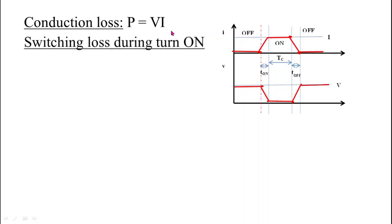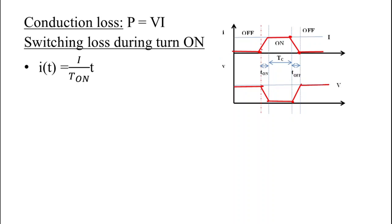To calculate switching losses during turn-on, we multiply the current and voltage equations during the turn-on transition — the transition from off state to on state. During this turn-on time, the current increases linearly while the voltage decreases linearly. We can write the equation of current as I divided by T_on, multiplied by t. Using the equation of a straight line y = mx + c, where m is the slope.